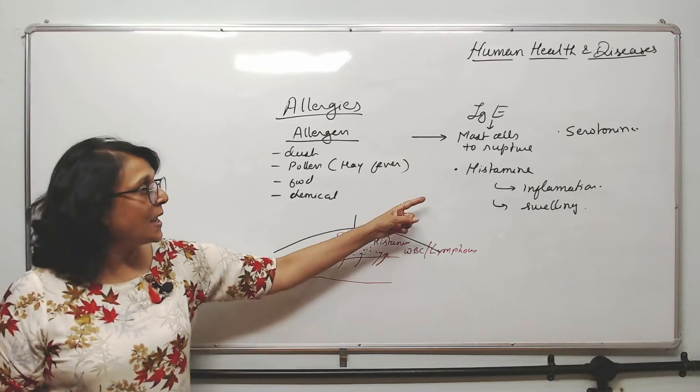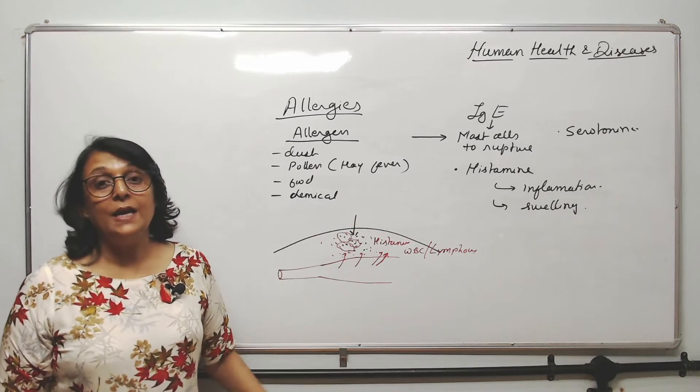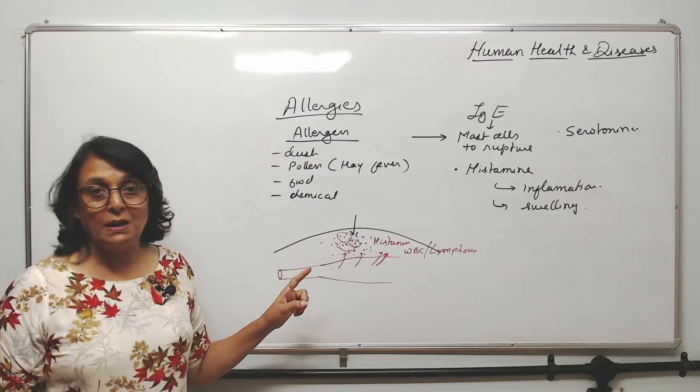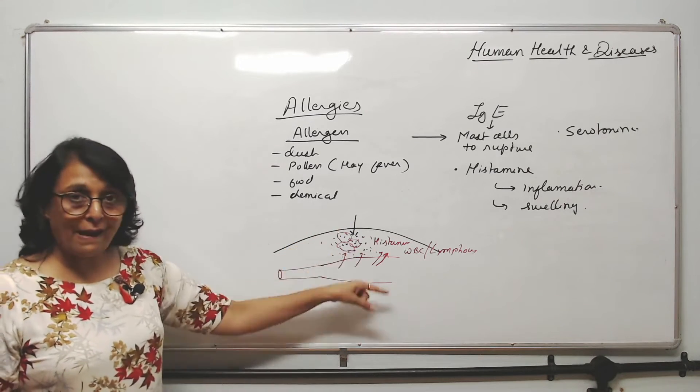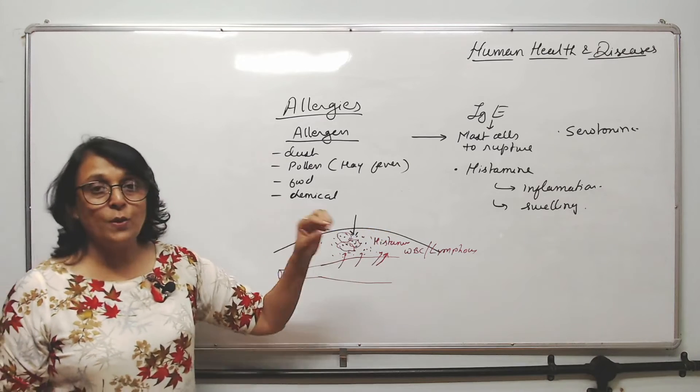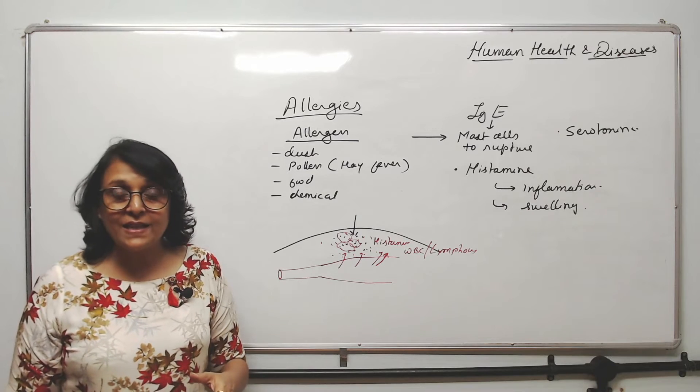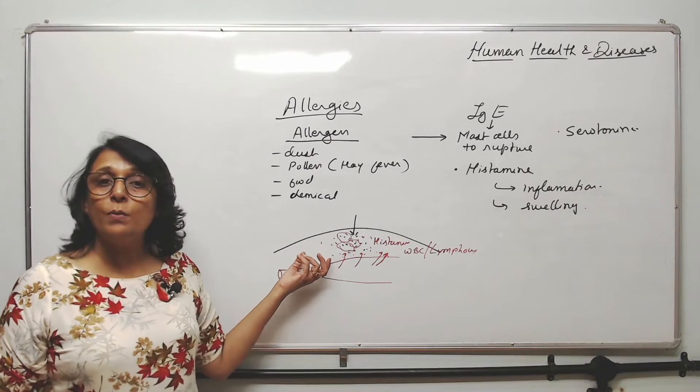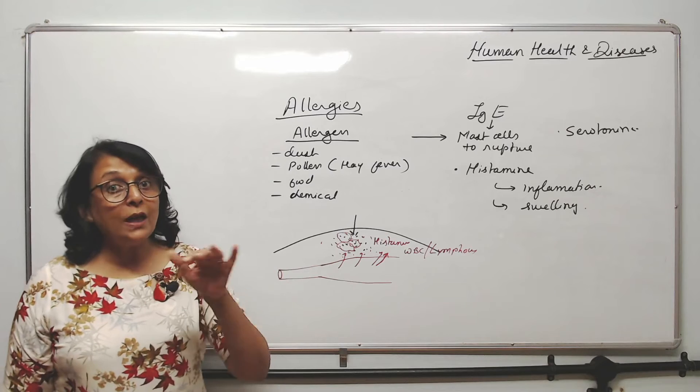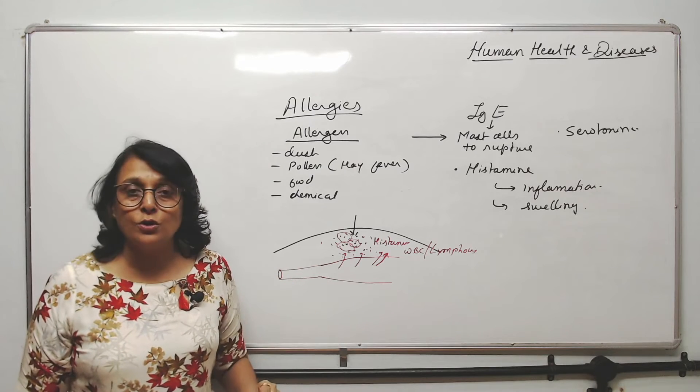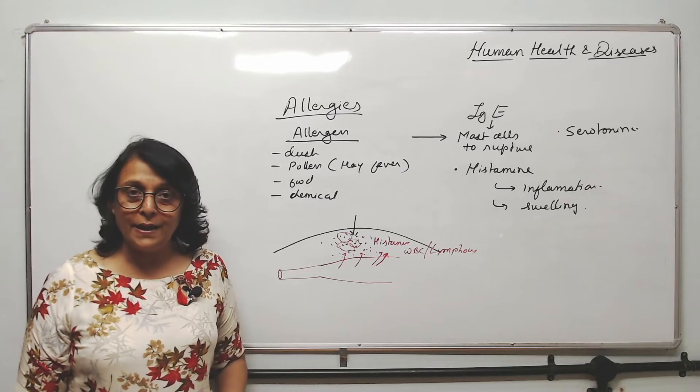So this allergic reaction is basically because of histamine. And because this is happening, the surface where there is an allergen, you see some swelling there. You see some redness there. Red because more and more blood is reaching there. And if you touch it, it feels warmer also, as compared to the other areas.